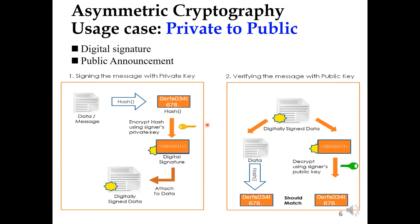Another usage case is private-to-public. This case is similar to a digital signature. When you send someone some information, you need to indicate in the letter that you are the real person that sent this message, not someone else. You need a signature. This signature is important so that the receiver knows this is not a fake message from someone else.